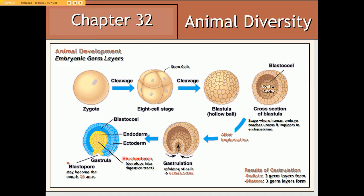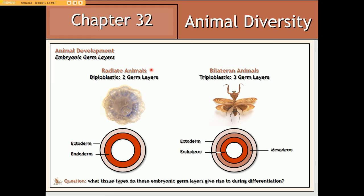The opening into the archenteron is known as the blastopore. In some animal groups, the blastopore will develop into the mouth; in others, it will develop into the anus. Animals that exhibit radial body plans have gastrulation that gives rise to only two germ layers — the endoderm and the ectoderm — and as a result are referred to as being diploblastic. Conversely, all animals that exhibit bilateral symmetry exhibit three germ layers: the endoderm, the ectoderm, and a mesoderm, and are referred to as being triploblastic.